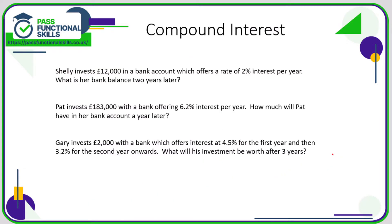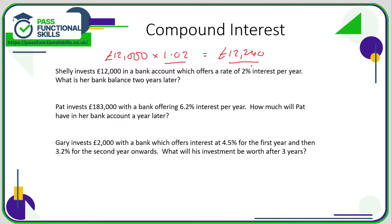Let's have a look at compound interest. Compound interest is when you receive interest on your interest. After one year, Shelley will receive £12,000 plus an extra 2%, so I'm going to multiply that by 1.02. You could also work out 2% of £12,000 and add it on, but using percentage increase multipliers is quicker. 12,000 times 1.02 is 12,240, so after one year her bank balance will be £12,240.